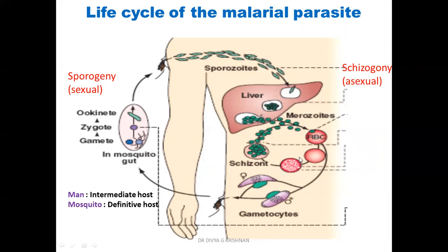The merozoites infect new RBCs and multiply in the RBCs — that is called blood schizogony — leading to the production of more merozoites. Finally the RBCs become so loaded with merozoites that they burst and release the merozoites into the blood. This is when the infective cycle begins and when the person manifests with fever, chills, and other symptoms of malaria. Some merozoites develop into male and female gametocytes.